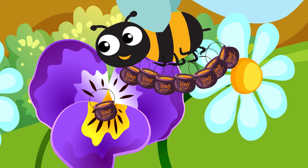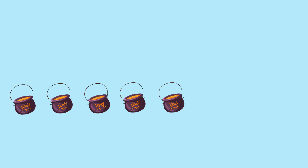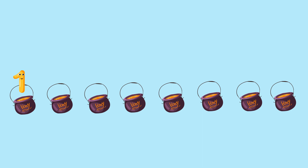1, 2, 3, 4, 5, 6, 7, 8. 1, 2, 3, 4, 5, 6, 7, 8. Now the bee has eight buckets of honey.